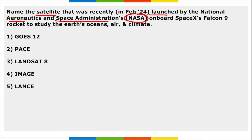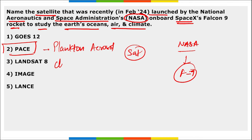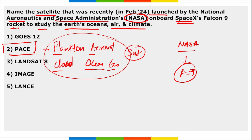Name the satellite recently launched by NASA on board a SpaceX Falcon 9 rocket to study Earth's ocean, air, and climate. It is PACE — PACE stands for Plankton, Aerosol, Cloud, Ocean Ecosystem. This is the name of the satellite launched by NASA using the Falcon 9 rocket of SpaceX to study the Earth's ocean, air, and climate.